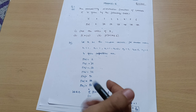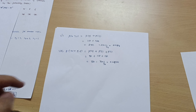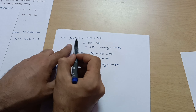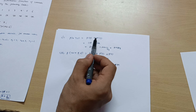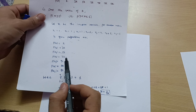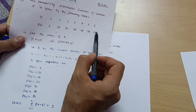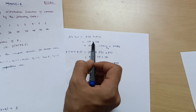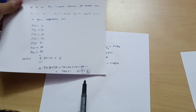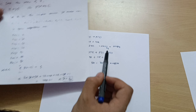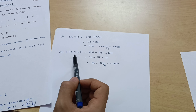That completes part one — finding k. Now for part two: P(X ≥ 5). This equals P(5) + P(6). The probability of 5 is 11k and the probability of 6 is 13k. Adding these gives 24k. Substituting k = 1/49, we get 24 × (1/49) = 24/49.